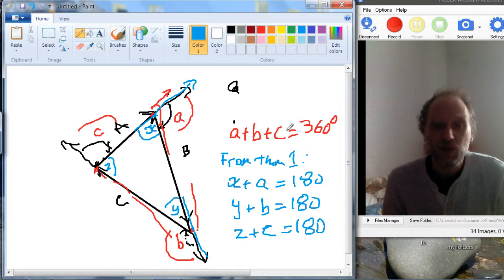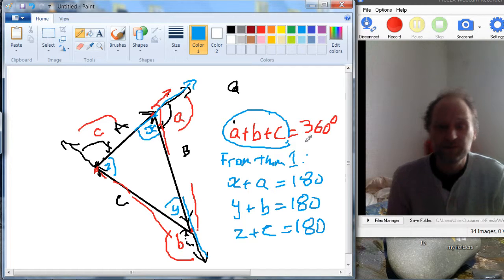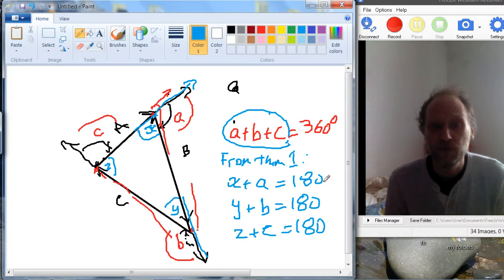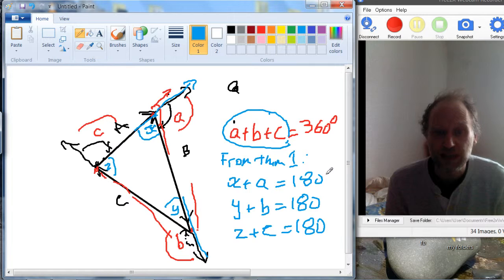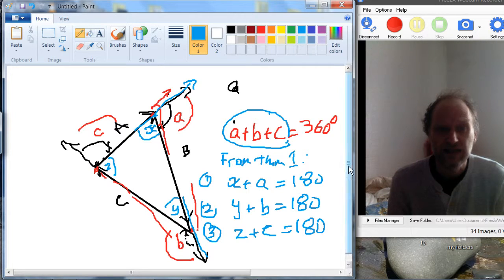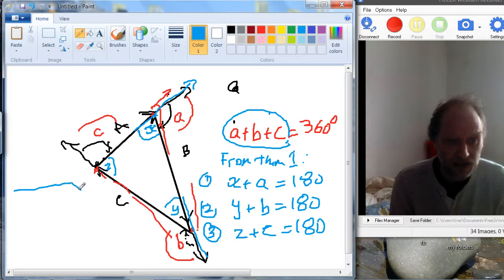Okay, but we also know already that A plus B plus C is 360 degrees. And if we add two of these, 180 plus 180, that will give us 360. So, let's add all these equations together, one, two, and three. And I could do with a new page here, but I'm just going to go over here, this side.